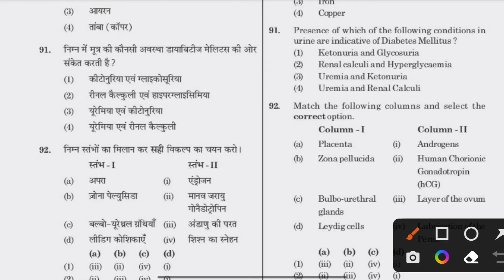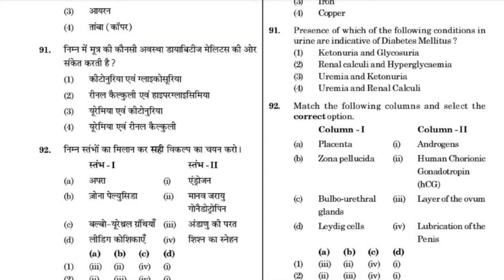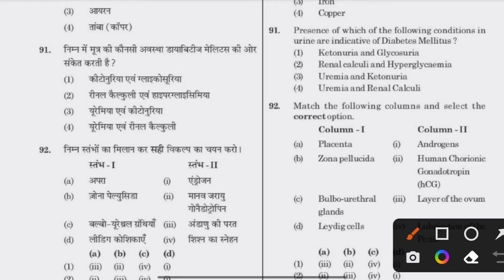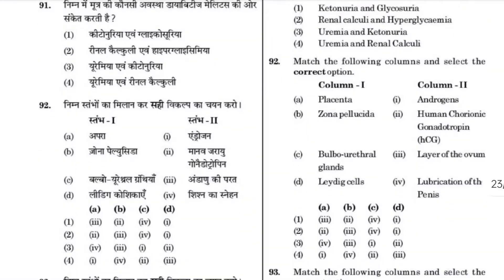Which of the following conditions in urine are indicative of diabetes mellitus? Ketone, urea, and glycosuria.